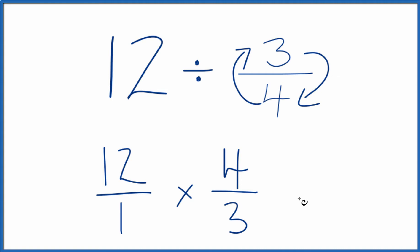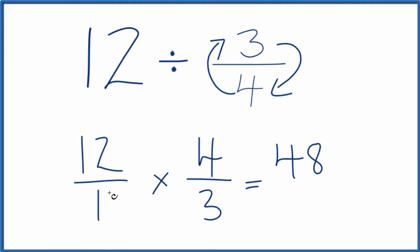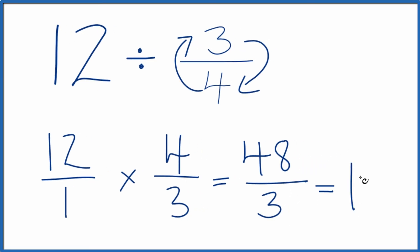we multiply the numerators and the denominators. 12 times 4 is 48. 1 times 3, that's 3. And 48 divided by 3, that's 16.